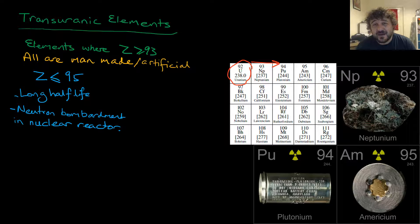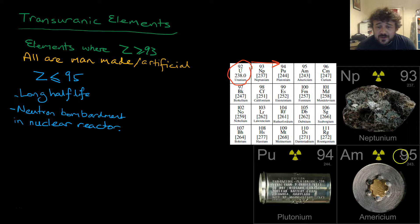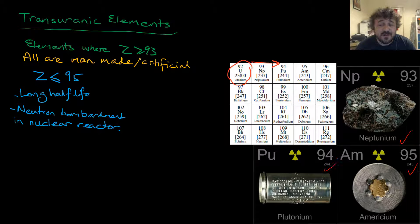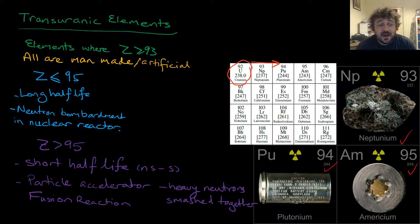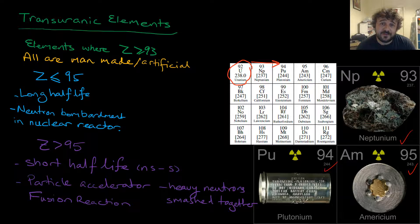For Z equal to or less than 95, these have a long half-life — we're talking about neptunium, americium, and plutonium. They have a long half-life and we make those by nuclear bombardment, which is done in a nuclear reactor. If Z is greater than 95, you're talking about a really short half-life, somewhere between nanoseconds to seconds.